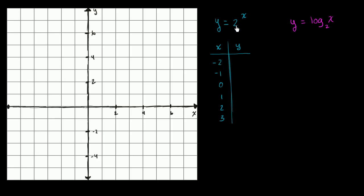So in each case, y is going to be 2 raised to this power. So 2 to the negative 2 power is going to be 1 fourth, 2 to the negative 1 power is 1 half, 2 to the 0 power is 1, 2 to the first power is 2, 2 to the second power is 4, 2 to the third power is 8.